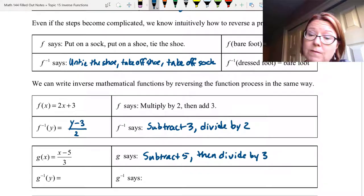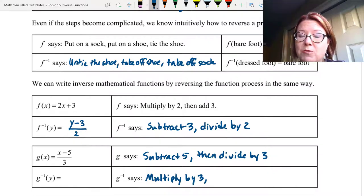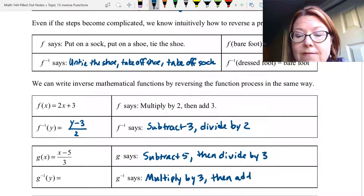To reverse that, we first undo the division by 3. The inverse, g negative 1, which is written g with a superscript negative 1, says first multiply by 3. And then we need to undo subtract 5. So then we add 5.